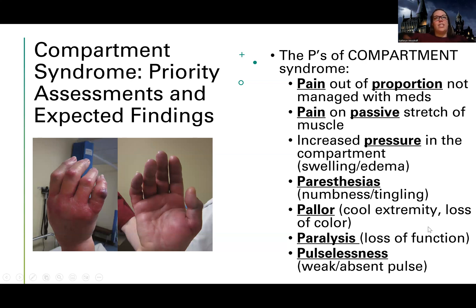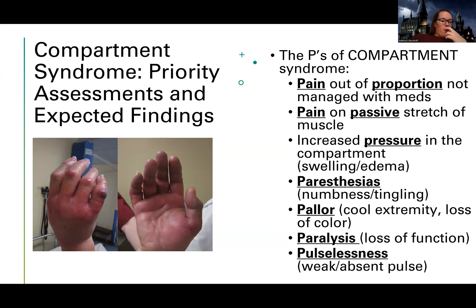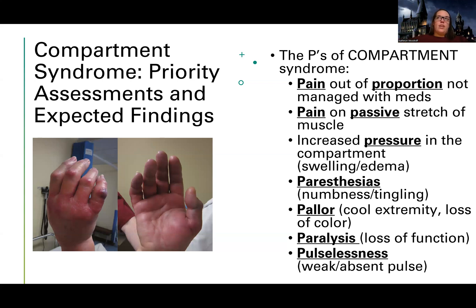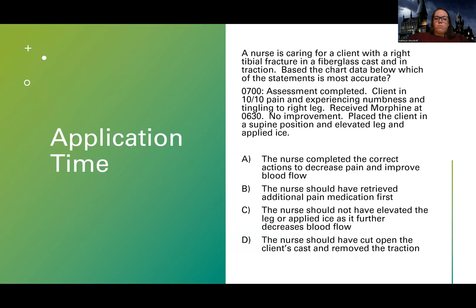Paresthesias - numbness and tingling. Think of this like crossing your legs too hard or falling asleep on your hand and feeling those pins and needles. That's because of decreased flow. We're also going to look at color and temperature - poikilothermia - a cool, pale extremity. Then paralysis - they may be unable to move it, but that's not going to be an early sign. And loss of pulse - they might have a decreased pulse to their extremity. For a leg issue, that's the dorsalis pedis or posterior tibial. For an arm issue, the radial pulse. We can also check capillary refill, which should be greater than three seconds if abnormal.